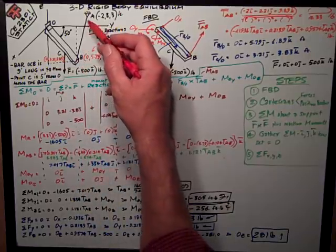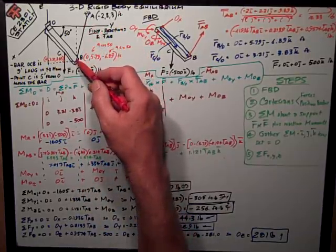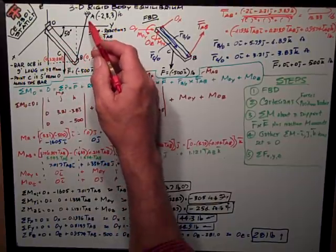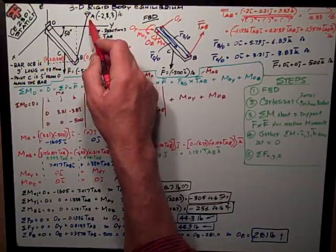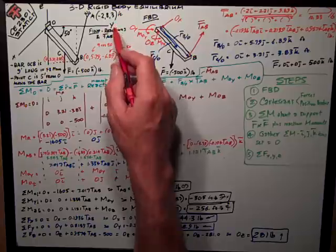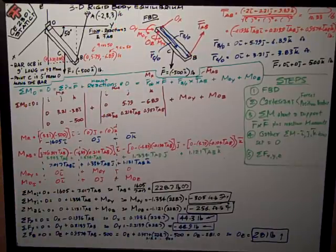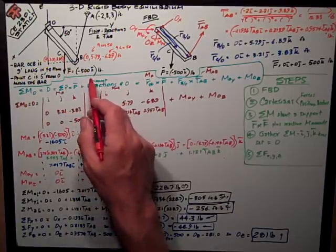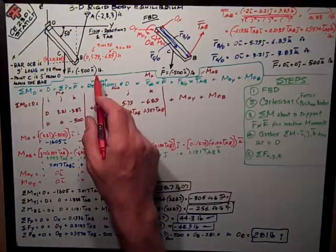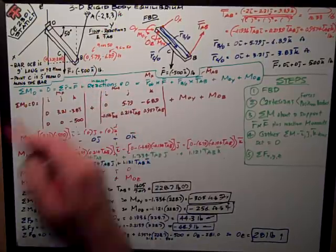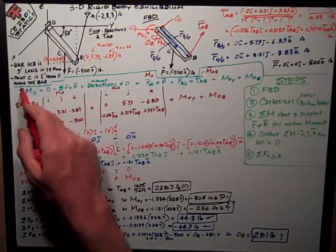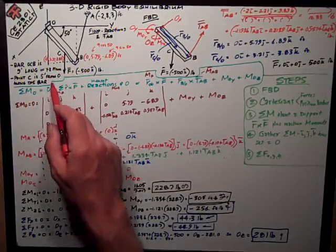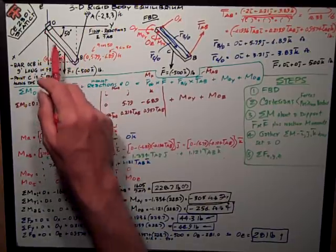I have a cable at this end, attached to point B, where the bar is 9 feet long, and running up to a support at point A, these coordinates, negative 2, 8, and 3. And then I've got a force, 500 pounds, which I've kind of already expressed in a Cartesian format, negative 500K pounds down, meaning it's attached at point C, which is 5 feet from the origin along the bar.